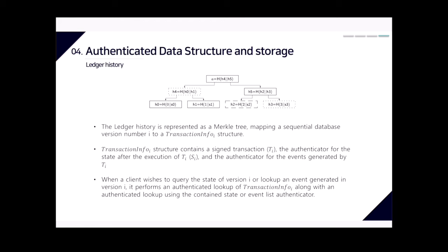The Libra database has ledger history, ledger state, accounts, and events. The ledger history is represented as a Merkle tree mapping a sequential database version number I to a transaction info structure. The transaction info structure contains a signed transaction, an authenticator for the state after execution of transaction I, and an authenticator for the events generated by transaction I. When a client wishes to query the state of version I or look up events generated in version I, it performs an authenticated lookup of transaction info I.